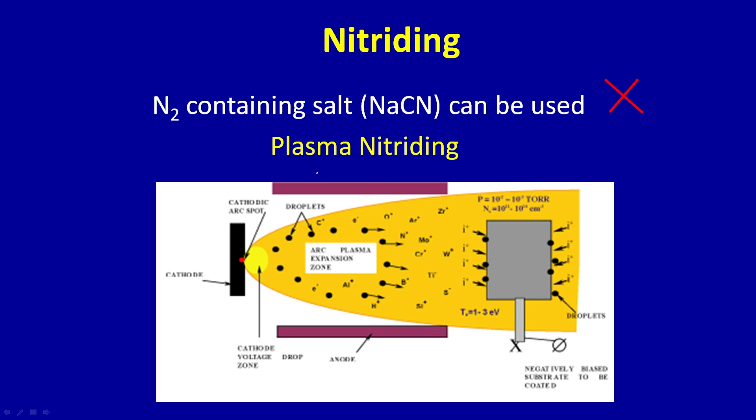Nitriding is basically done by salt bath or plasma nitriding. Salt bath requires sodium cyanide, which is very dangerous and not environmentally benign. This can generate poisonous cyanide gases, so it's discarded. Instead, nitrogen plasma is created inside a chamber, and the workpiece is subjected to the plasma, which allows nitrogen to get implanted inside these gears. Finally, nitrogen forms compounds with iron like Fe4N and Fe3N, making the surface harder.